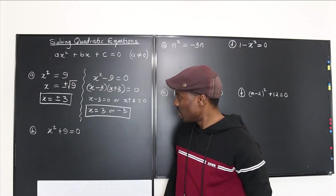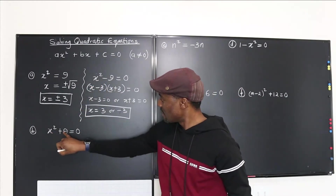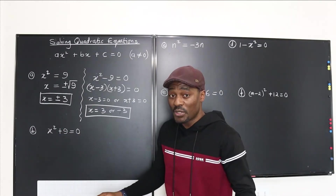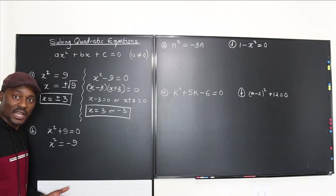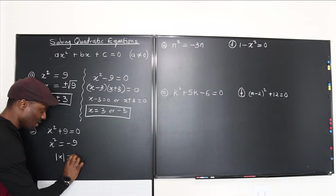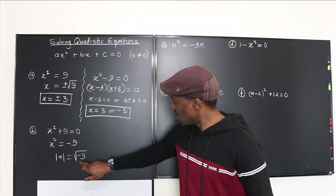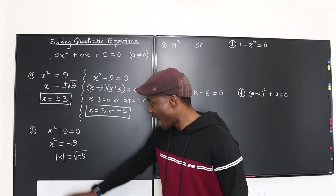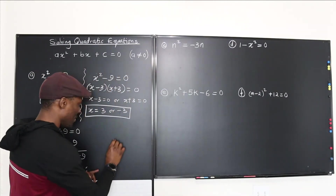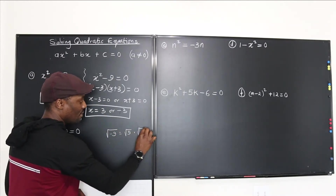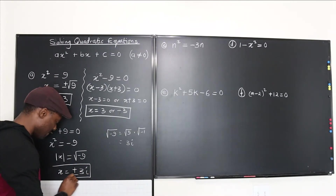For x² + 9 = 0, this is a sum of two squares, so you can't factor it. Move 9 to the other side: x² = −9. Taking the square root of both sides gives |x| = √(−9). Since you can't take the square root of a negative number and get a real answer, the result is imaginary. Rewrite √(−9) as √9 · √(−1) = 3i, so x = ±3i.